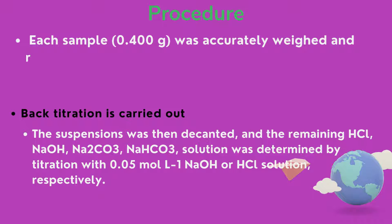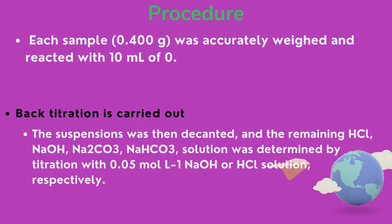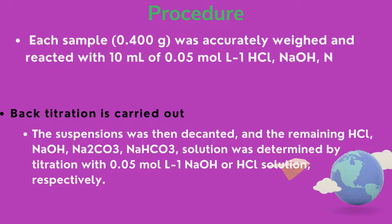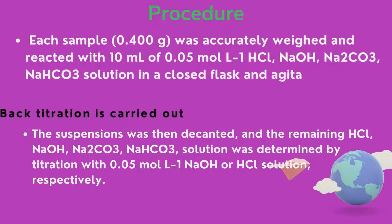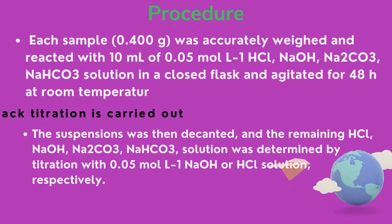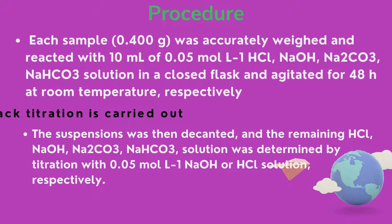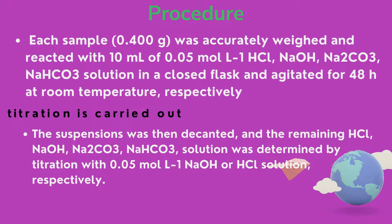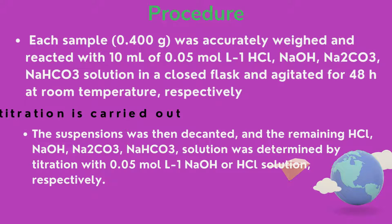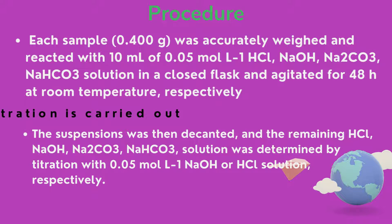In this video I will show you two types of adsorbent. In the first step, each sample — for example 0.4 gram — is accurately weighed and reacted with 10 ml of 0.05 mol/L hydrochloric acid, sodium hydroxide, sodium carbonate, and sodium bicarbonate solution in a closed flask, and shaken for 48 hours at room temperature in an orbital shaker. Then back titration is carried out and the suspension is decanted.